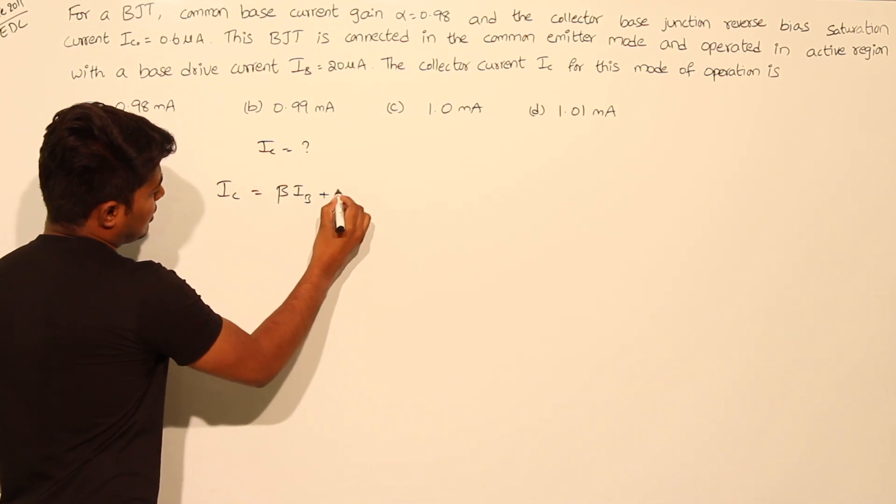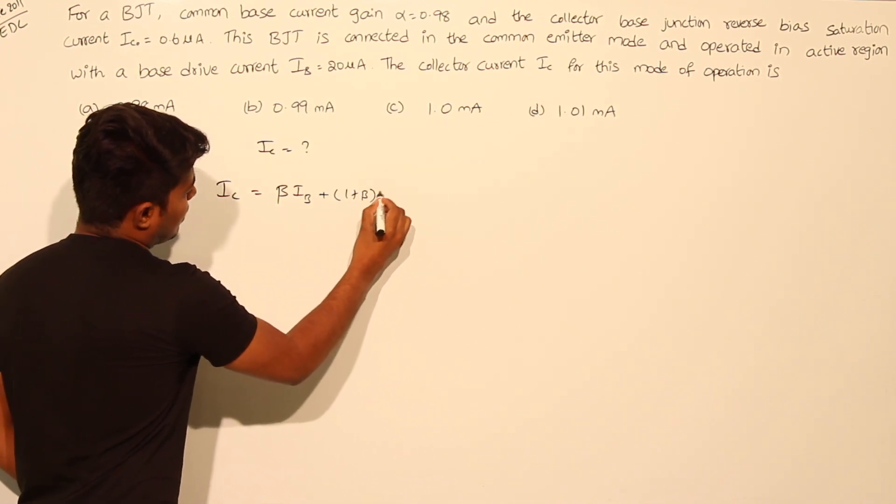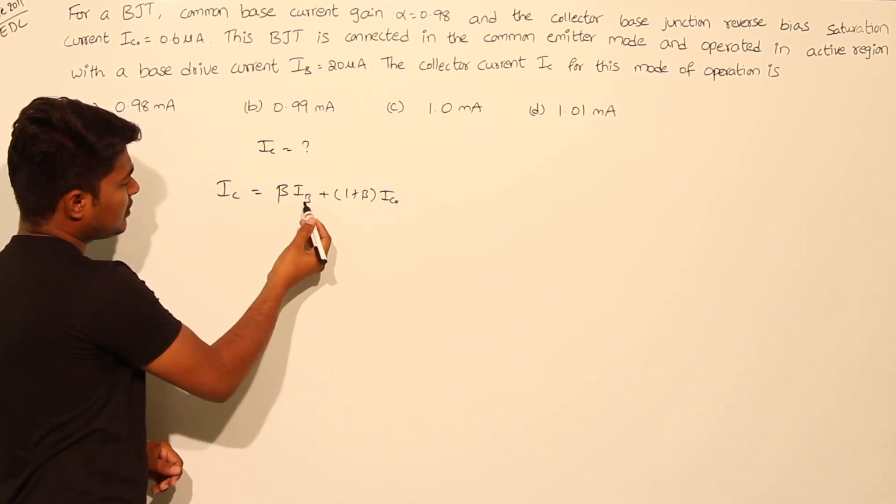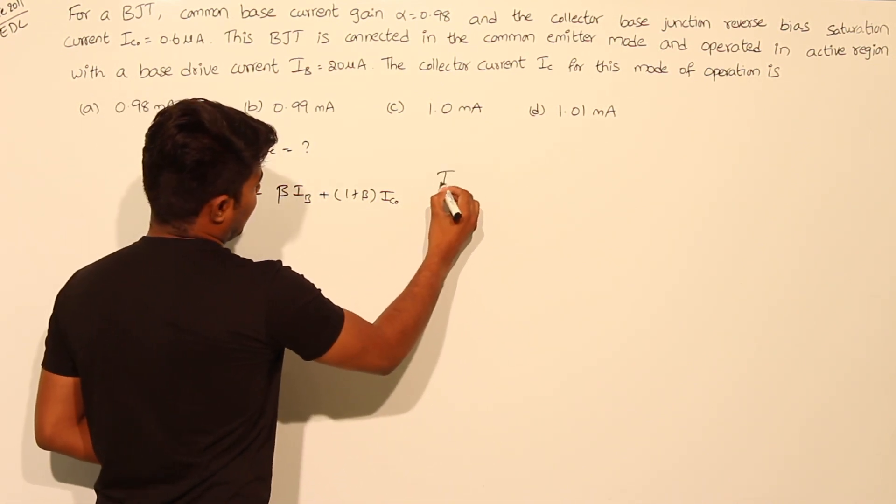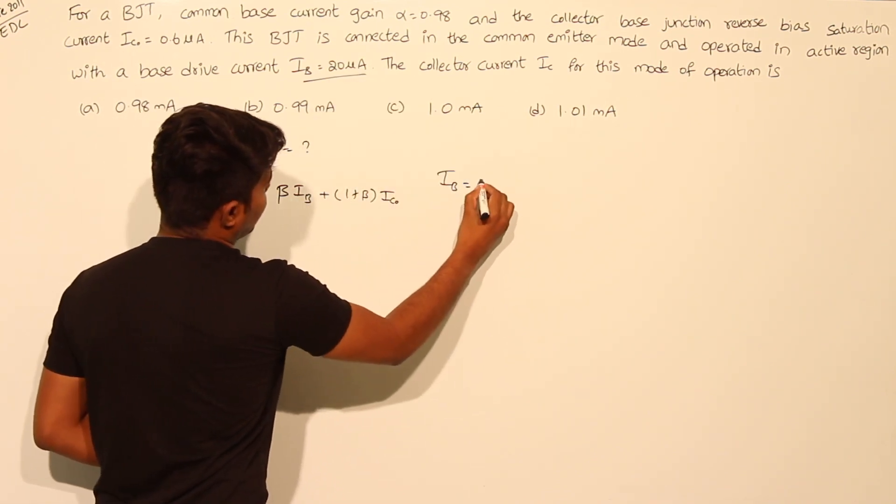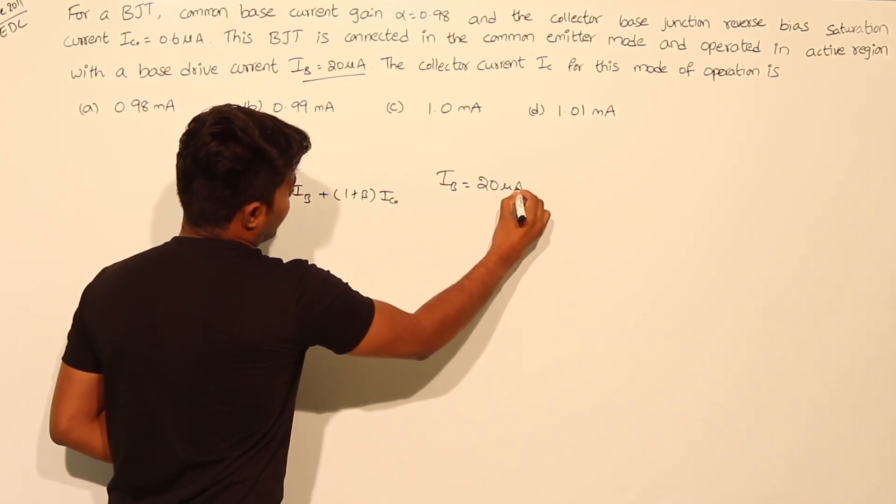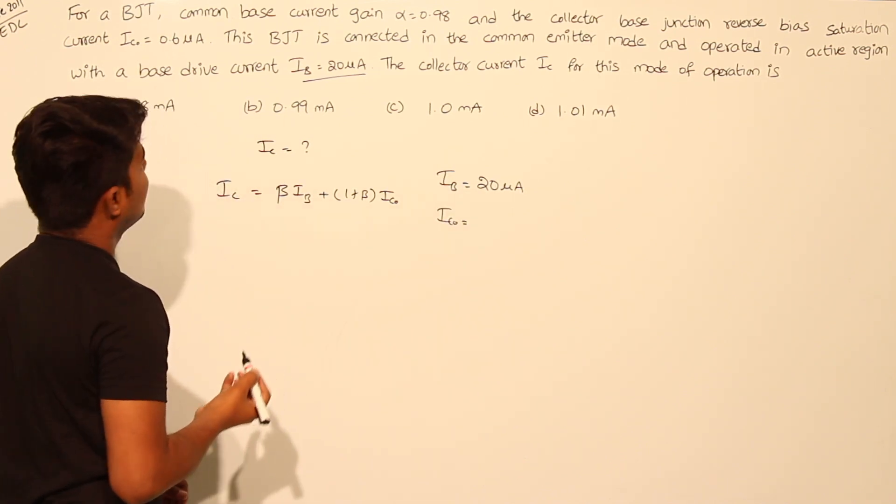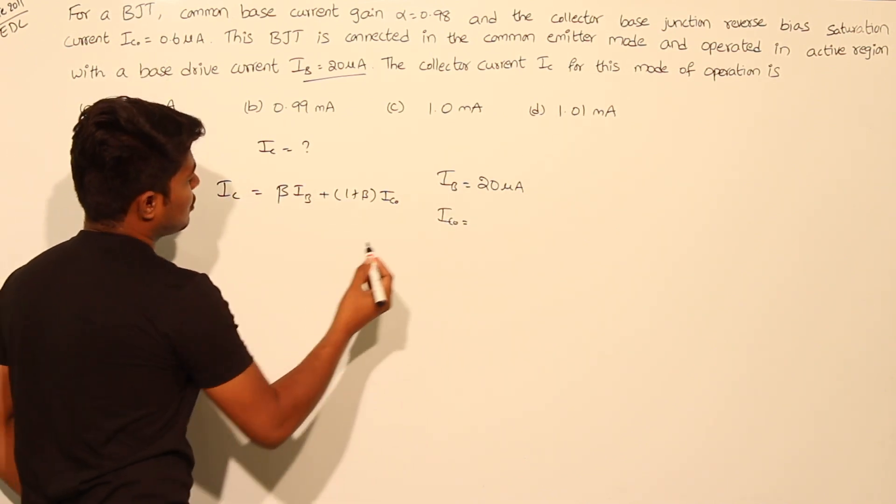Where beta - IB is the base current given. IB is the base current given as 20 microamps.